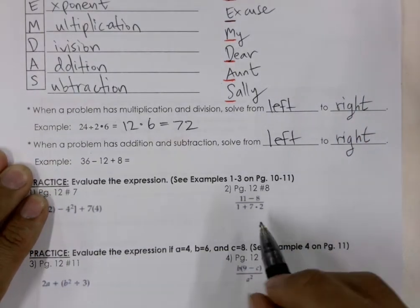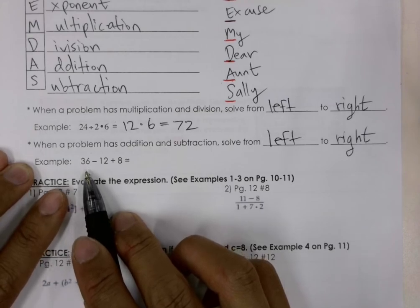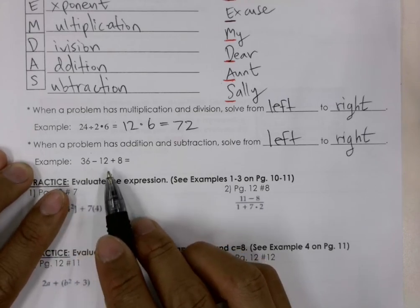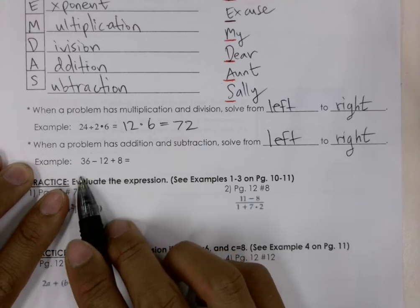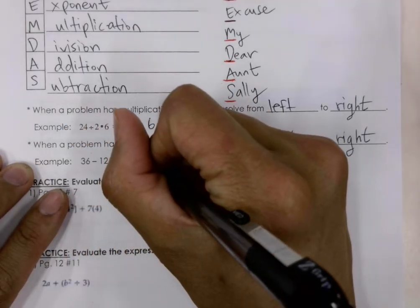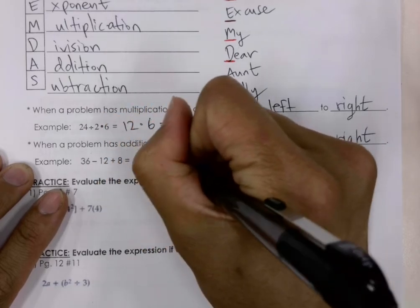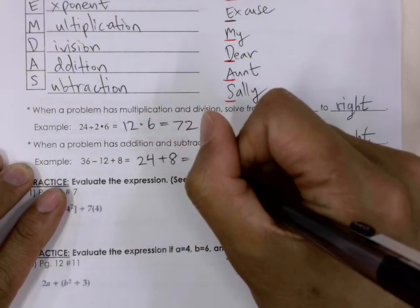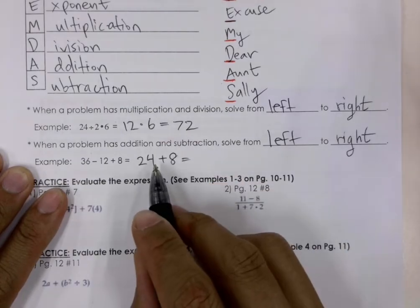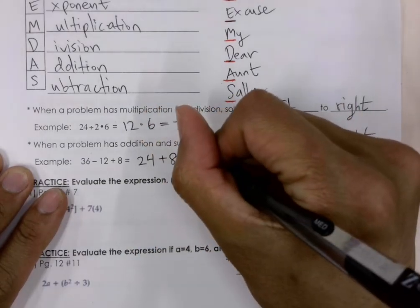For example, 36 minus 12 plus 8. We'll start with 36 minus 12. We'll get 24 plus 8. And finally, we'll do the addition, and we'll get 32.